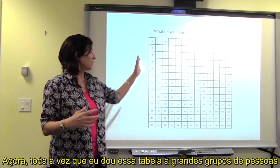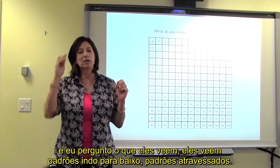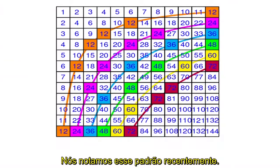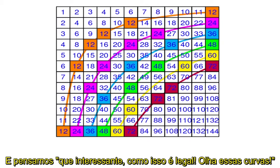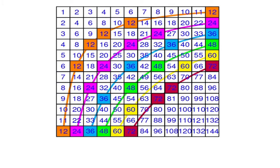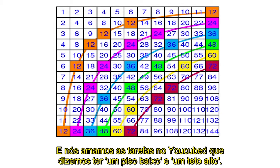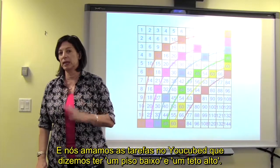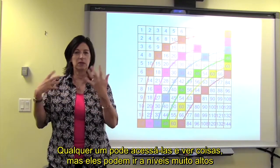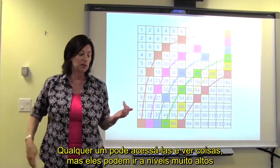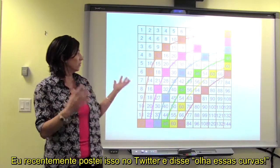Whenever I give it out to large rooms of people and ask what they see, they notice patterns going down and patterns going across. Recently we noticed these curves that show multiples on the multiplication table, and we love it. At youcubed we love tasks that are low floor and high ceiling — anybody can access them, but they go to really high levels. This is a perfect example of that.